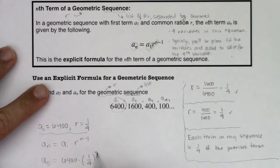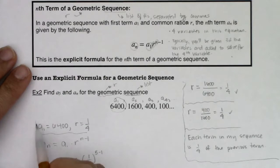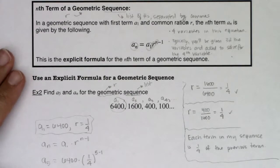What is a sub 5? Well, that would be equal to a sub 1, which is 6,400, times r, which is 1 fourth, to the n minus 1. Well, n is 5. So let's see what we have.